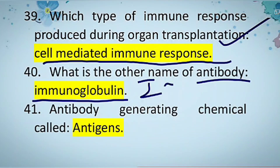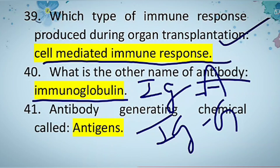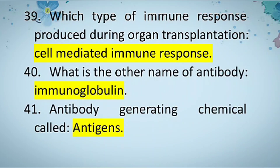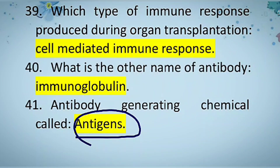The other name of antibody is immunoglobulin, denoted as Ig — for example IgA, IgM, IgE, and others. The next question: what is an antibody-generating chemical called? It is called an antigen — any foreign particle or chemical that stimulates the release of antibodies.